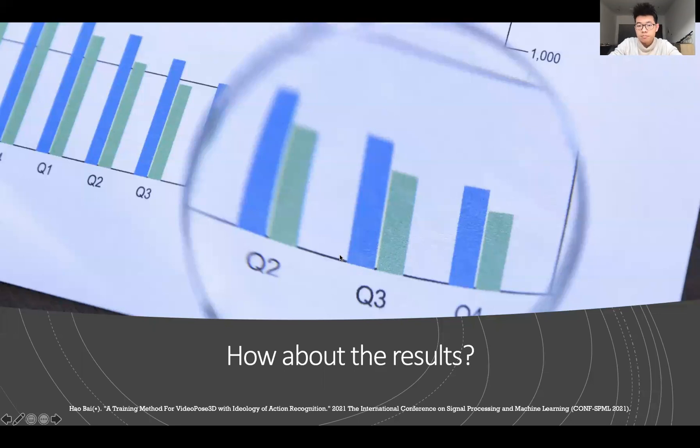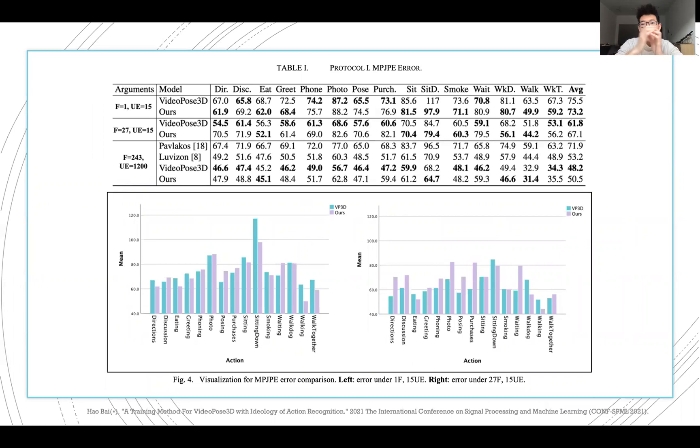Now let's see the results. The first one is Protocol 1, the MPJPE error, which is very standard. We can see that when the receptive field is one, or very small, and the unit epoch number is small two, which means very huge and limited data and time, when the training data and training time is very small, you can see that our model outperforms the original one. But when it comes up, you can see we are not doing good. Why this happens, I haven't drawn out a conclusion, but later we'll see. You can see on the visualization part that the VideoPose3D has a much larger variance.